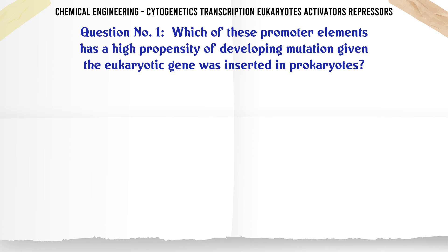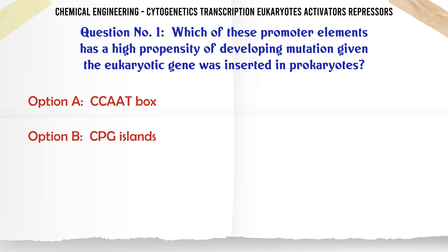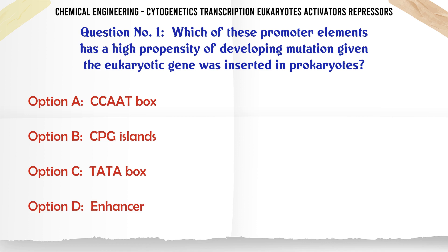Which of these promoter elements has a high propensity of developing mutation given the eukaryotic gene was inserted in prokaryotes? A. CCART box. B. CpG Islands. C. TATA box. D. Enhancer.